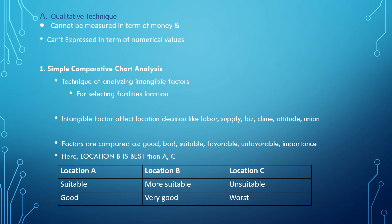In the simple comparative chart, factors are compared as good, bad, suitable, favorable, or unfavorable. For example, location B is the best among A, B, and C: location A is suitable and good; location B is more suitable and very good; location C is unsuitable and worse. Therefore, B is the most preferable location.